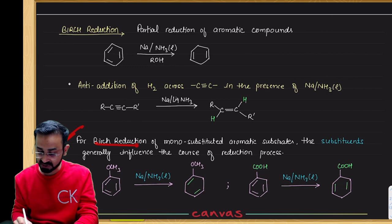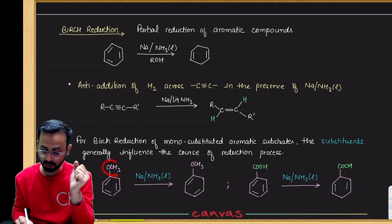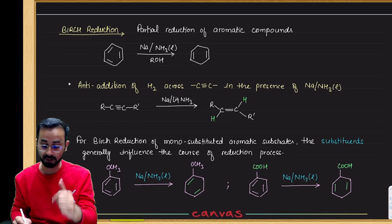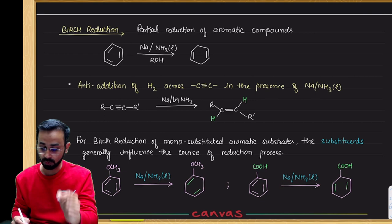Now Birch reduction is important because when you do monosubstitution, if there is an aromatic group on it, the group will decide which double bonds will be reduced or not. So you will remember that. The donating group is on benzene.